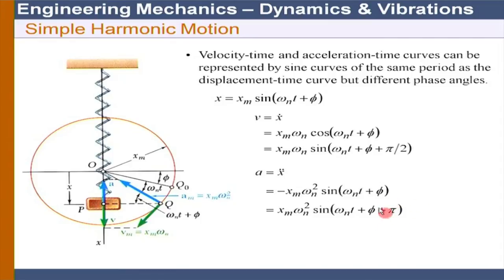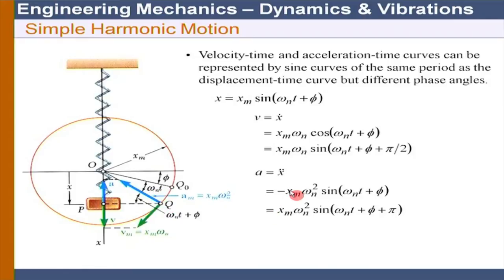These phase relationships arise because we have simple harmonic motion. The acceleration component along the x-axis on the rotating circle is −sin(ω_n·t + φ) — negative to the displacement. The velocity component is the cosine: cos(ω_n·t + φ). This is the particle projection interpretation of simple harmonic motion.